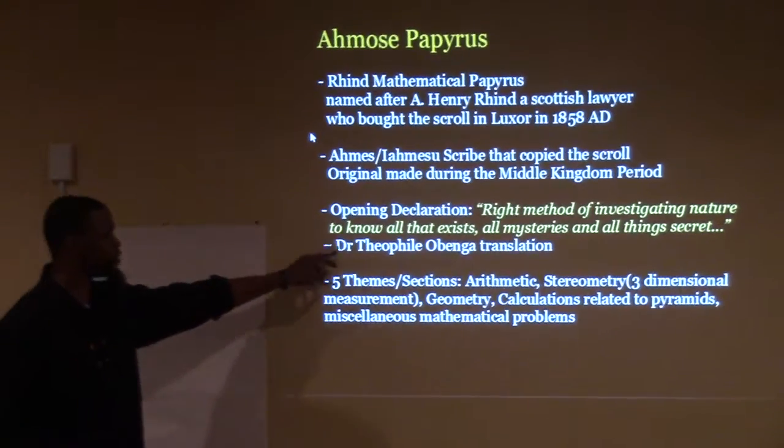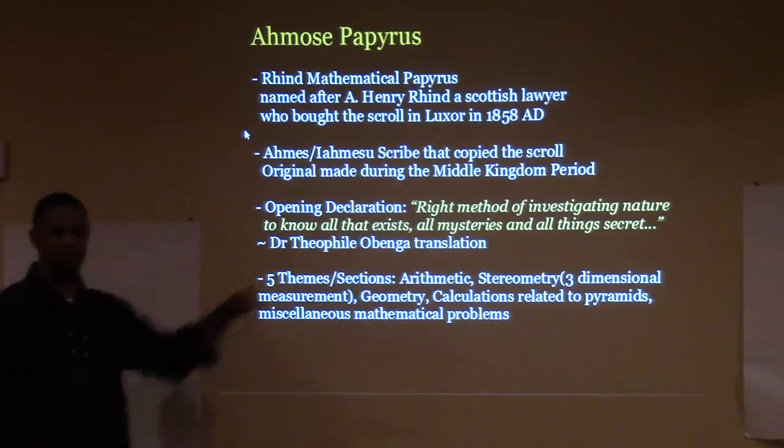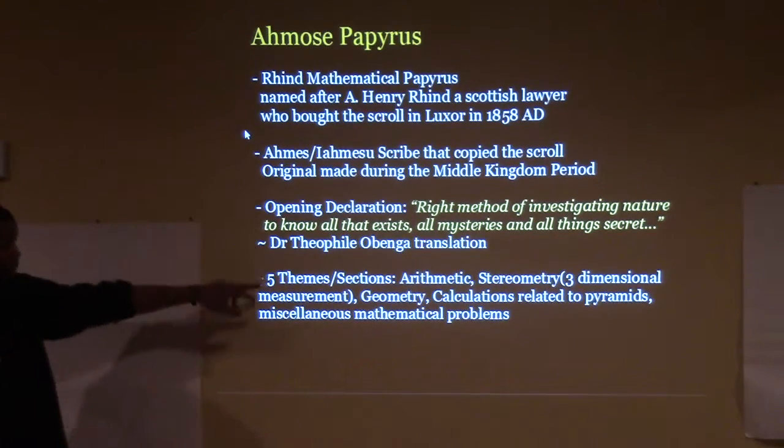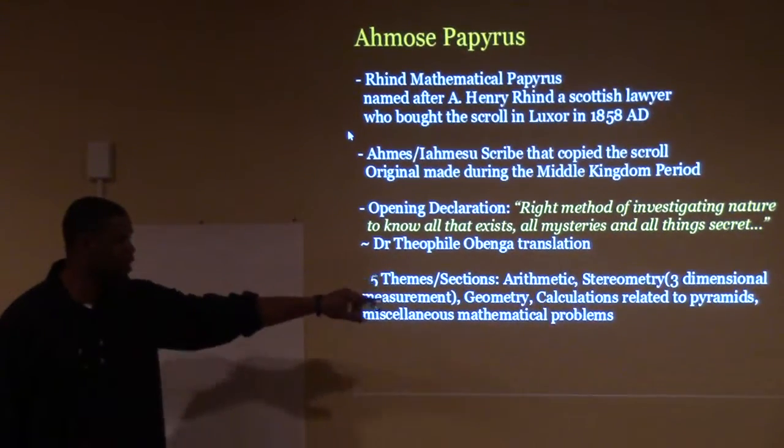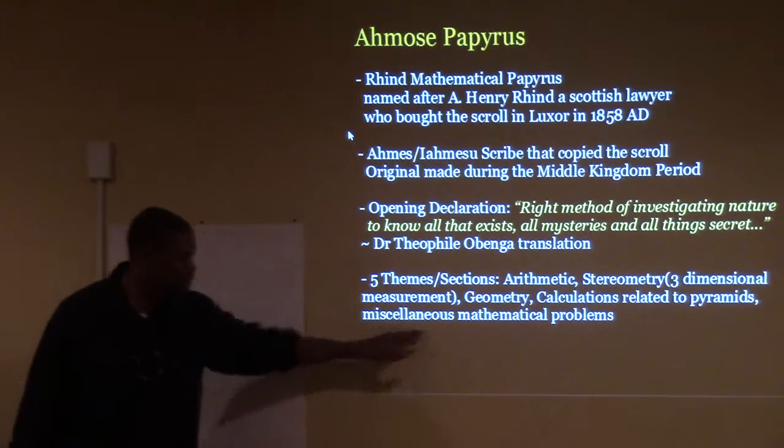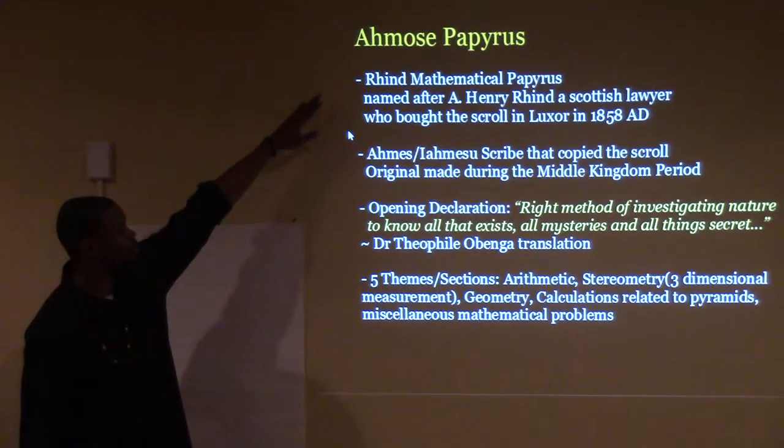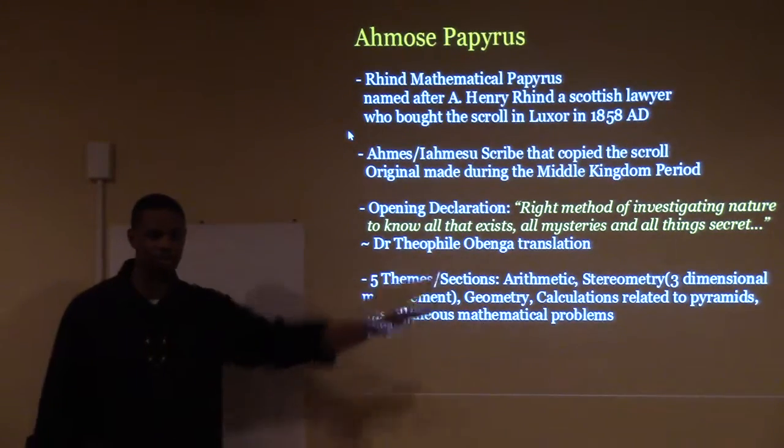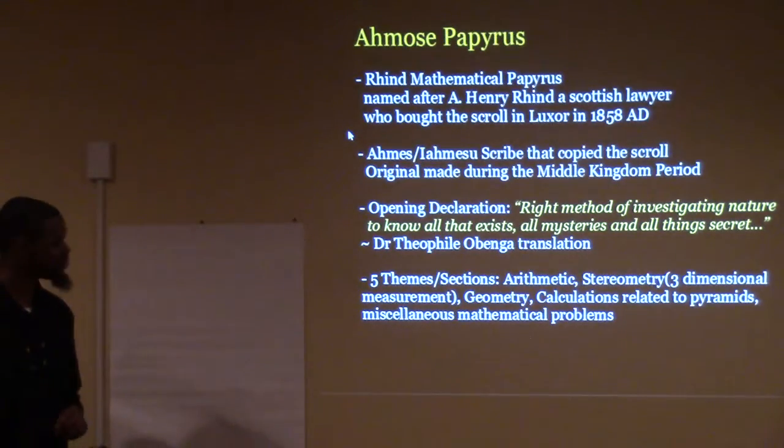This is the translation by Dr. T. Eric Peet. Other people translated this too, but this is the best one. So now this Papyrus is divided into five sections: Arithmetic, Stereometry (we're just talking about three-dimensional measurement), Geometry, Calculations related to the pyramids, and miscellaneous mathematical problems. These five sections compose the Ahmose Papyrus right here. We're about to know all that exists, all mysteries, and all secrets. That's a math class I want to take it.